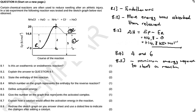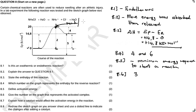8.6: give the number on the graph that represents the activated complex. Sometimes they use big words — the activated complex is just the peak of your graph. The peak is our activated complex.